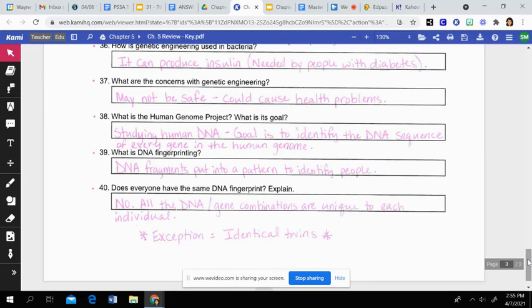Then DNA fingerprinting is when DNA fragments are separated and put into a pattern that can then be looked at and read. And it's used to identify people. And it's like your fingerprints, but looking at DNA. So then does everybody have the same DNA fingerprint? And this is false. So they do not. Just like with our own unique fingerprints on the tip of our fingers, all the DNA and gene combinations that we have are unique to each individual. The only exception would be identical twins.